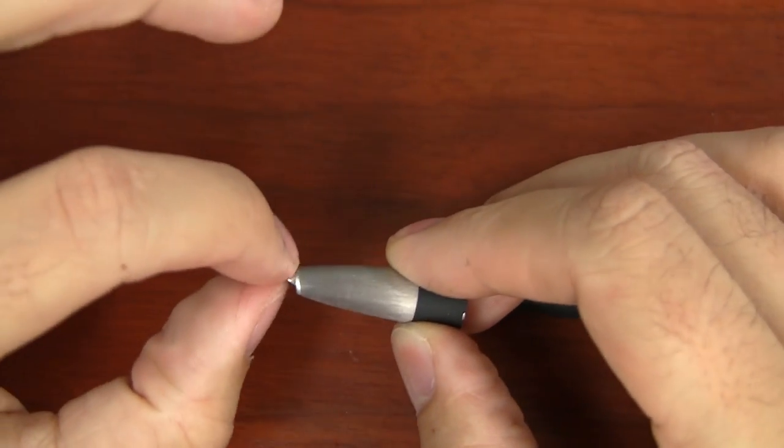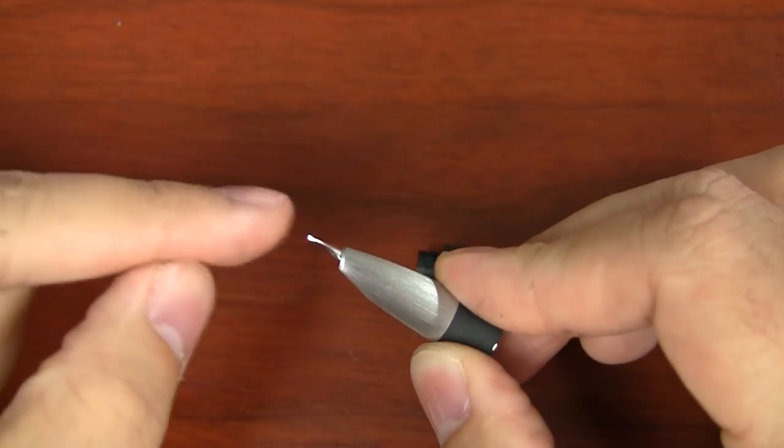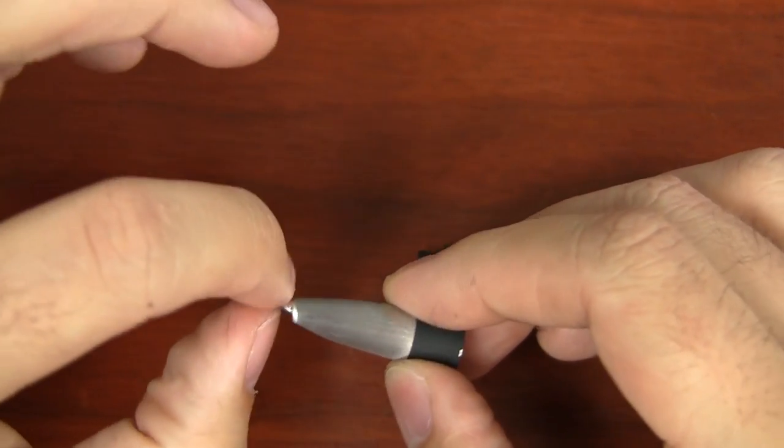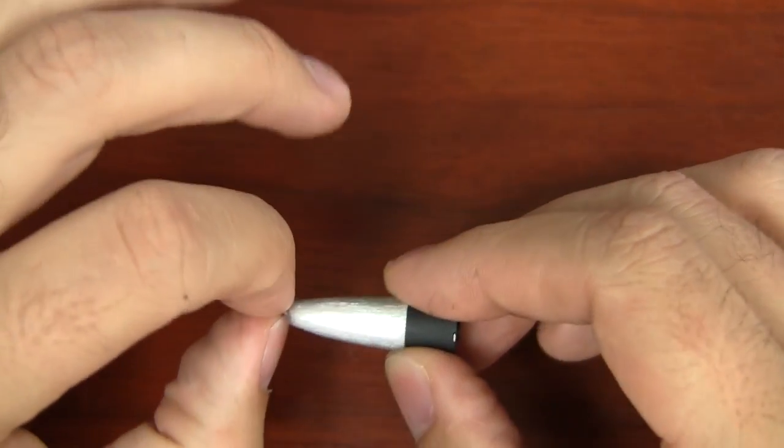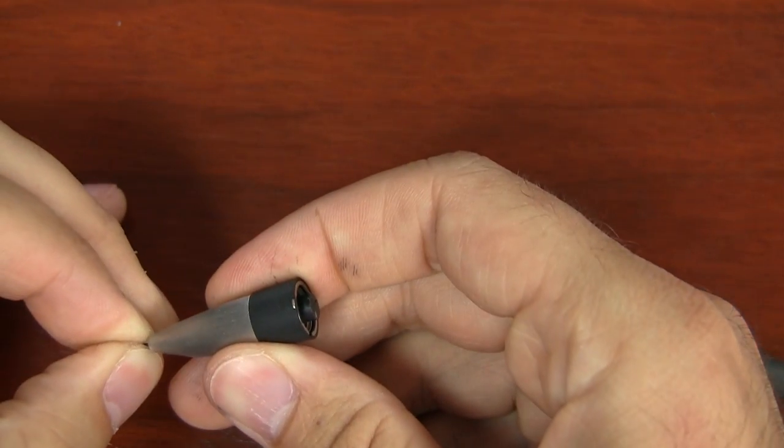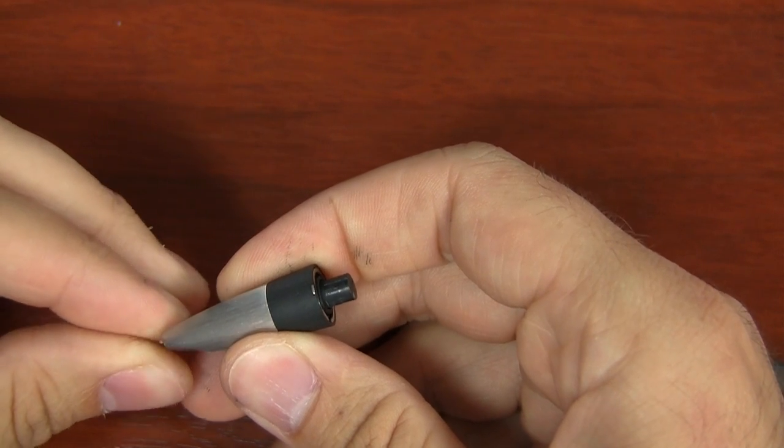Really, all you want to do is take and grab the nib end of the pen. You don't want to push on the tip of the nib itself, because you don't want to get those tines out of alignment. But if you carefully grab near the base, then you can actually push that feed right out of there.